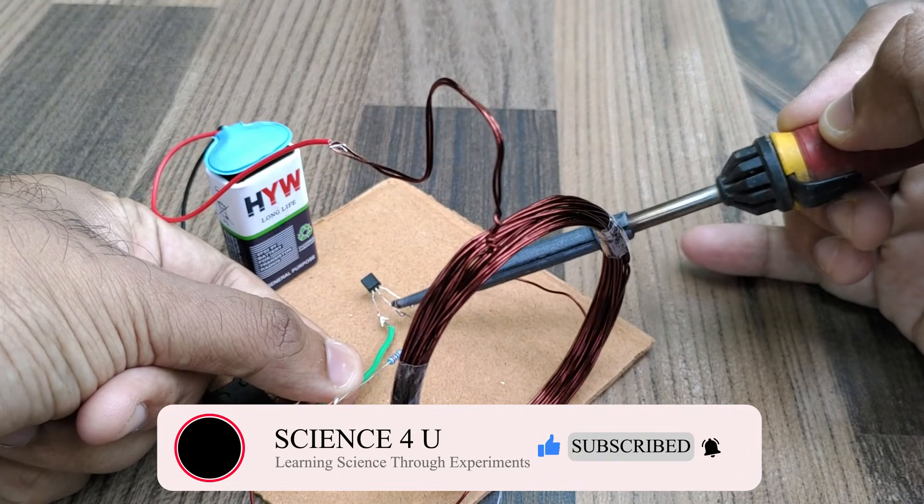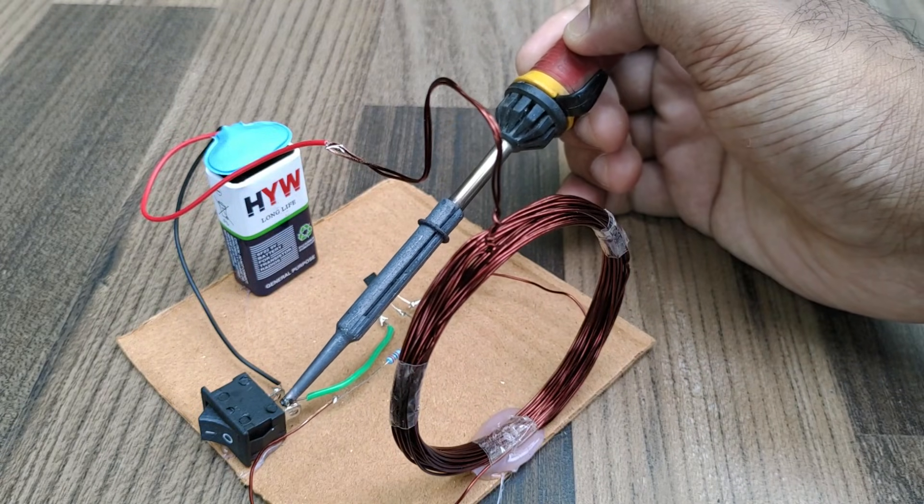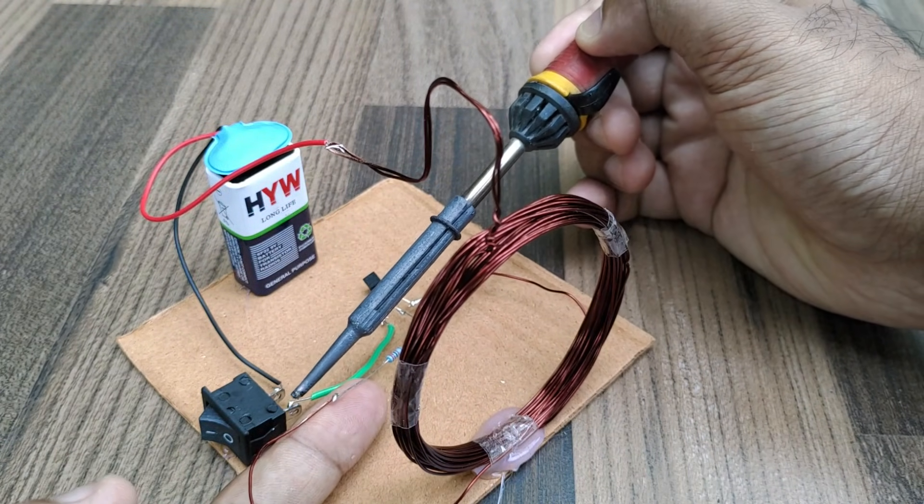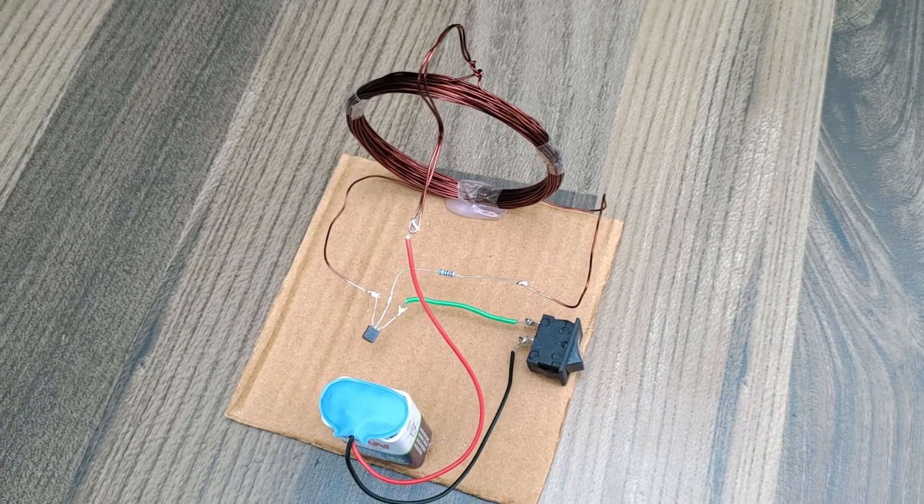Now, take a strip of wire and connect the emitter pin of the transistor and other terminal of the switch. The transmitter circuit is ready.